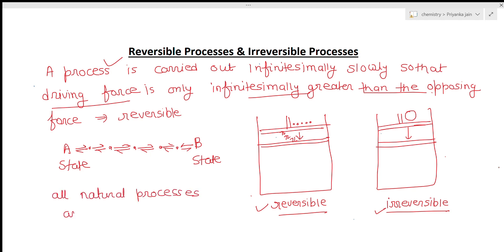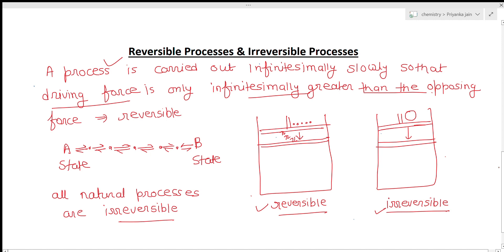Actually, in nature there is no process that is truly reversible. Ideally, all natural processes are irreversible. Reversible processes are only theoretical — they do not happen in nature. We consider them theoretically just so that we can understand and compare irreversible processes.